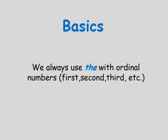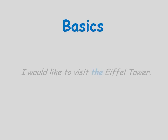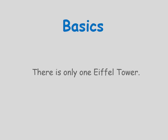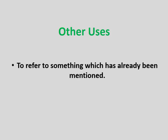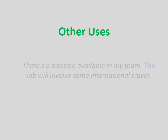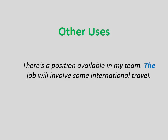Ordinal numbers include: first, second, third, etc. For example, 'I would like to visit the Eiffel Tower' — there is only one Eiffel Tower. We also use 'the' to refer to something which has already been mentioned: 'There is a position available in my team. The job will involve some international travel.'